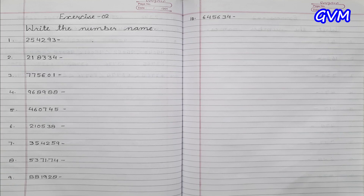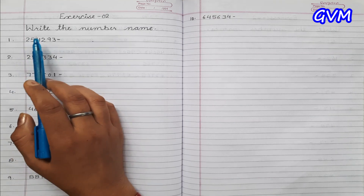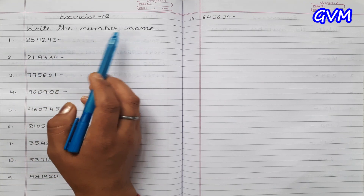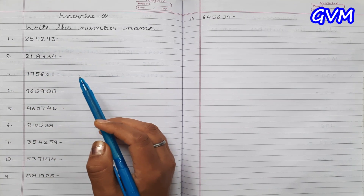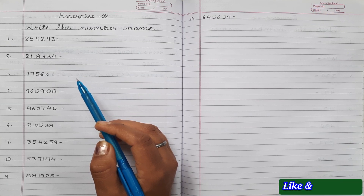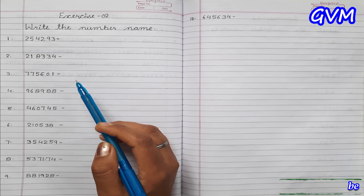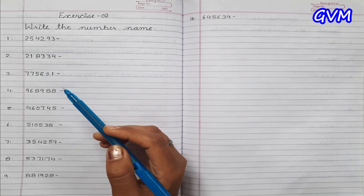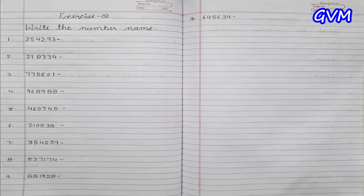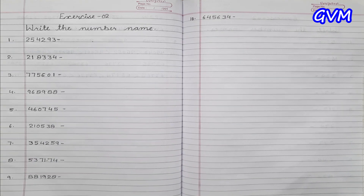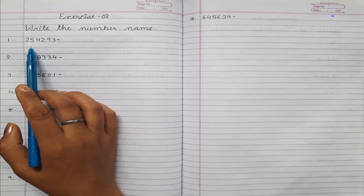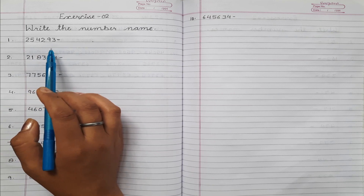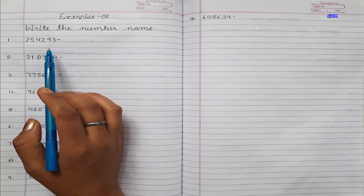Hello dear students, today we are going to start our next topic. In this topic I explain about how to write the number name. Number name means when we write the given numbers in word form. Jab hum given numbers ko word form mein likhte hain usse hum number name kehte hain. Let's start the topic. First, given number — students, sabse pehle hain given numbers ke place value count karenge.